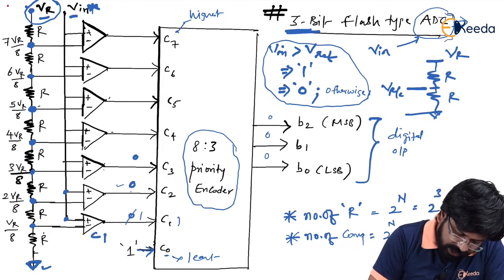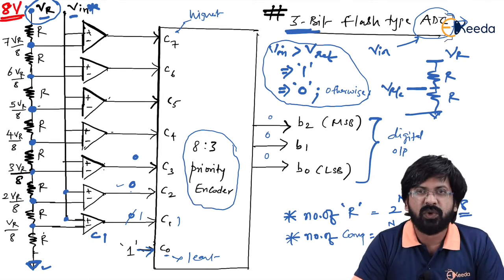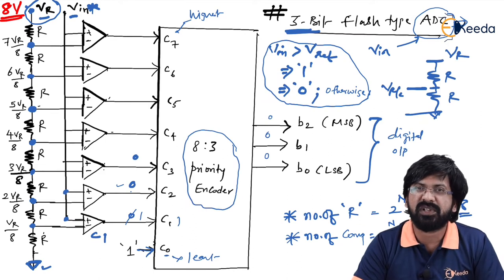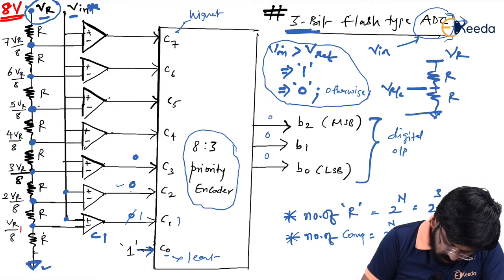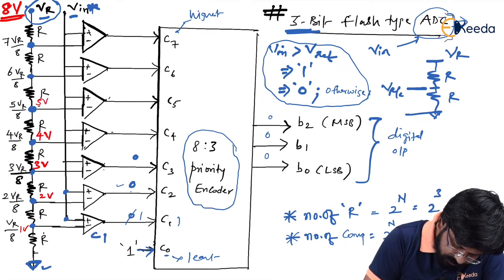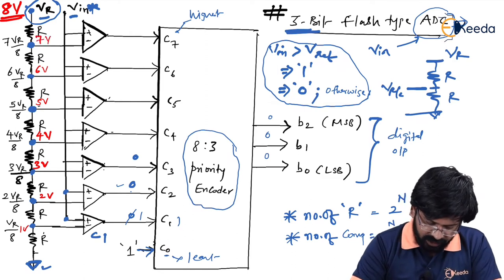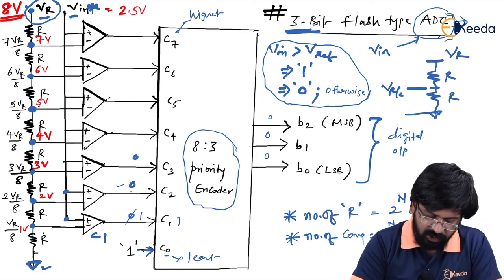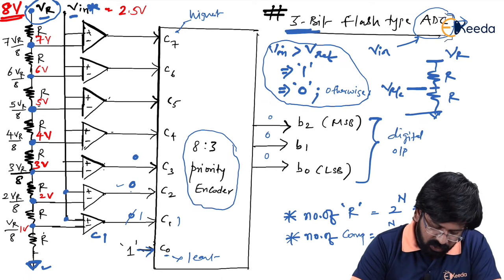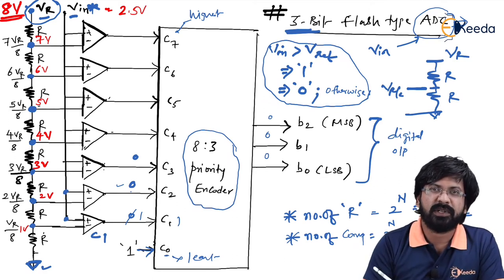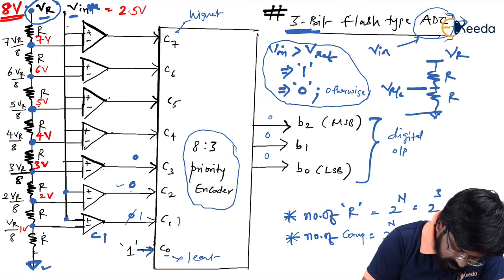Let's take a numerical example: assume VR equals 8 volts. With 8 equal resistors in series, each resistor has VR/8 equals 1 volt. So the reference voltages are 1V, 2V, 3V, 4V, 5V, 6V, 7V. Now assume Vin equals 2.5 volts — this value is applied to every non-inverting terminal of the comparators.